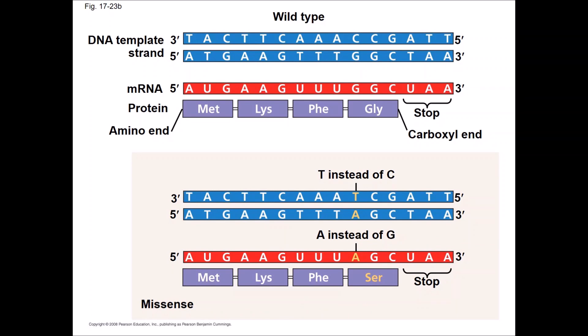Mutations that change the amino acid sequence of a polypeptide are called missense mutations, like the one we saw in hemoglobin. Here, the mutation was a C to A in the first nucleotide of a codon. This converted the code for glycine into the code for serine.